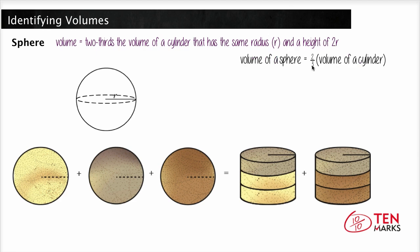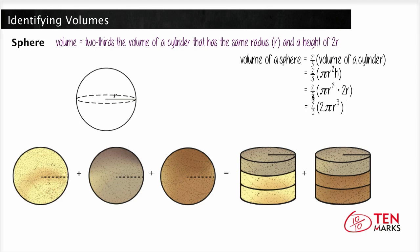The volume of a sphere is 2 thirds the volume of a cylinder. The volume of a cylinder's formula is pi r squared times h. To simplify further, we substitute 2r for h and get 2 thirds times 2 pi r cubed. Multiplying out the rational numbers gives us the volume of a sphere as 4 thirds times pi r cubed.